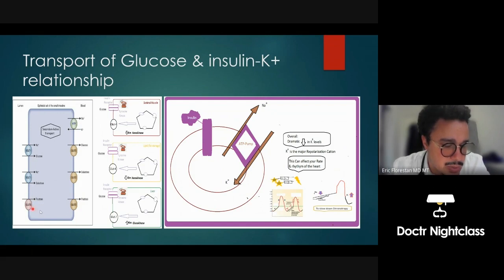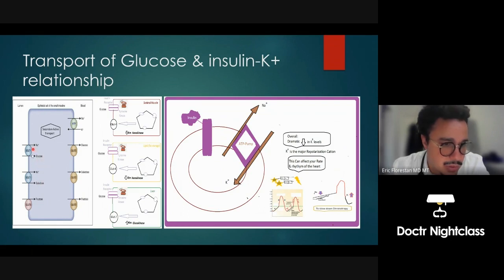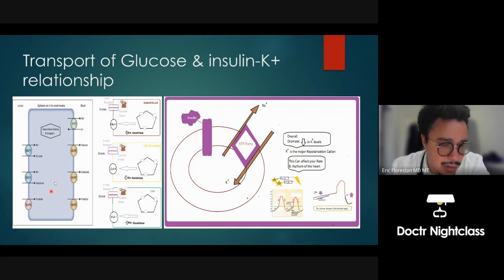GLUT-5 is important for spermatogenesis — we'll cover that in repro. Galactose comes from breast milk and glucose we get all over the place in Western civilization. Galactose and glucose share the same transporter: SGLT-1. You can think of 'one' because these are the primary sources of glucose for us. GLUT-2 is going to absorb all of these monosaccharides — fructose, galactose, and glucose — because it's the second site of transporters. The first site is on the lumen; the second site is at the brush border where GLUT-2 operates.